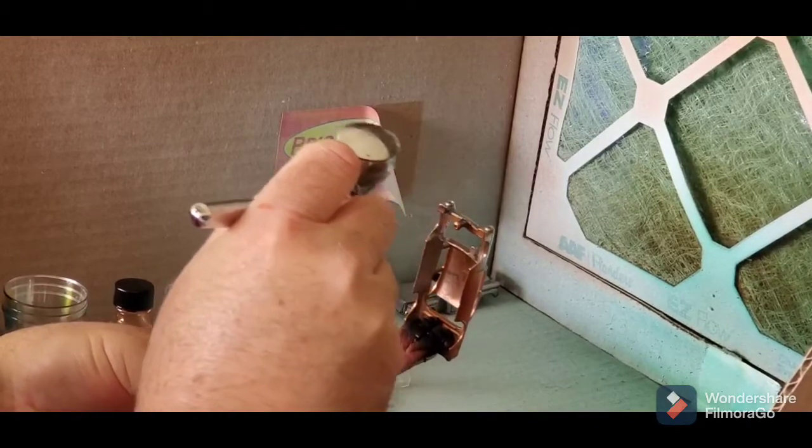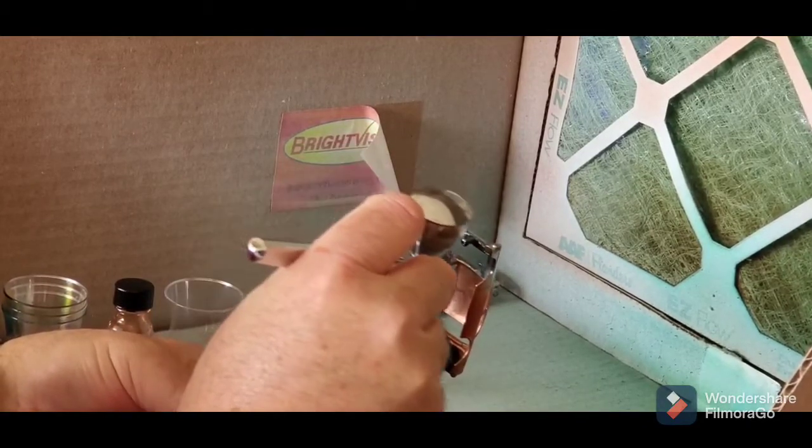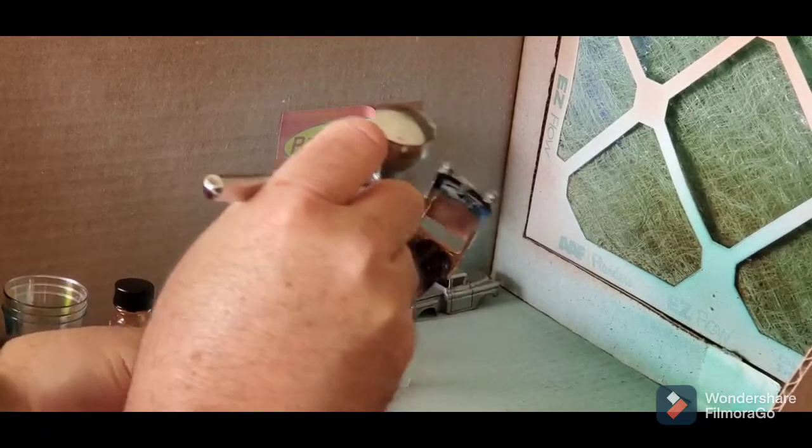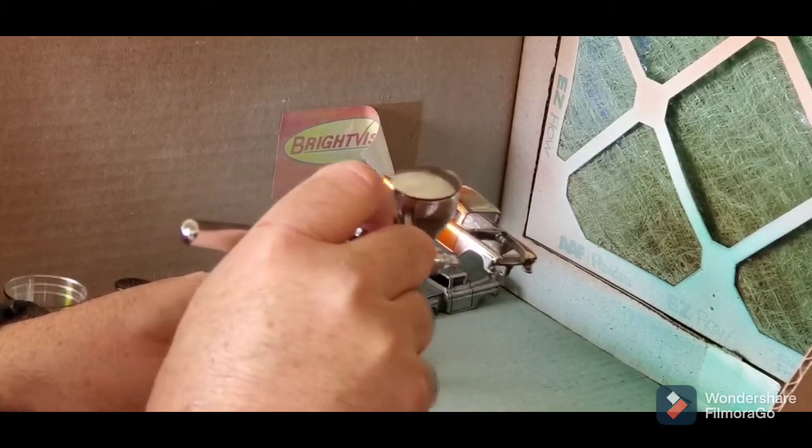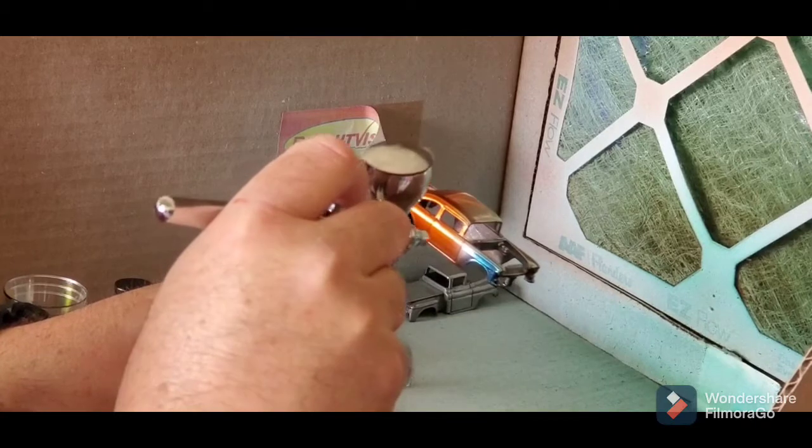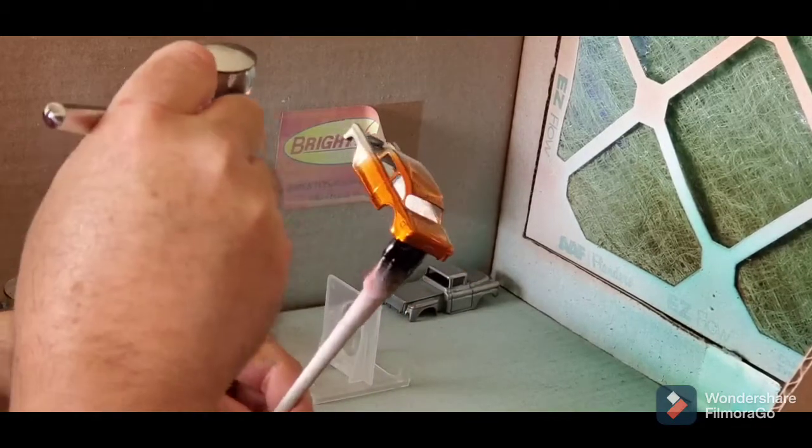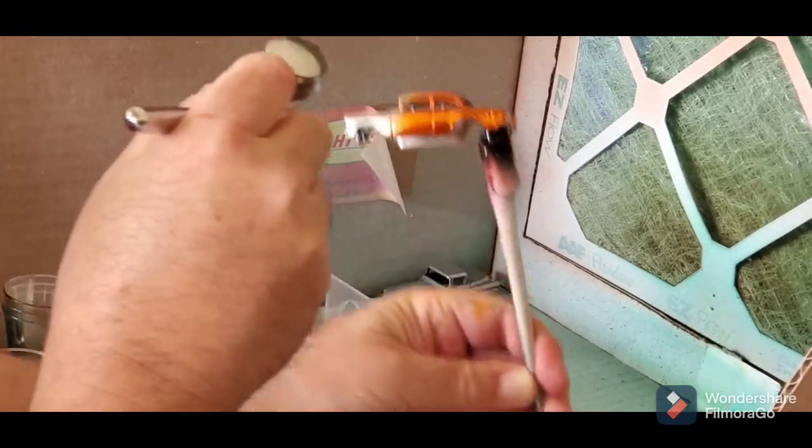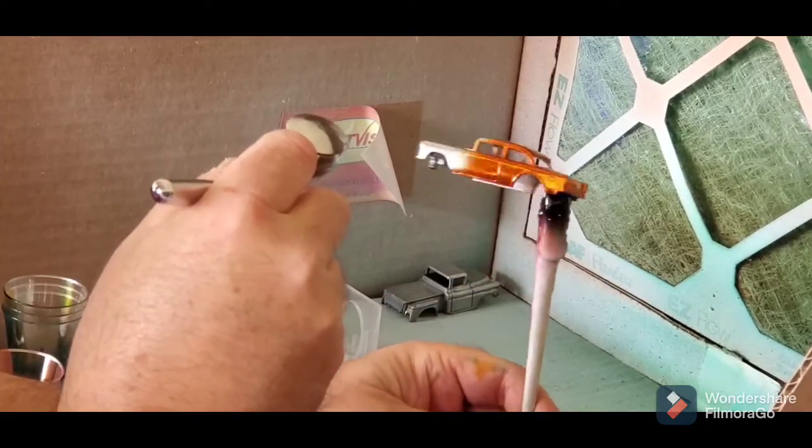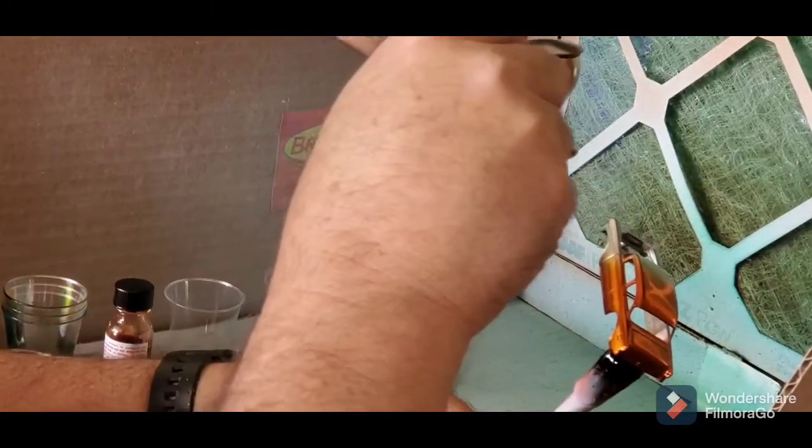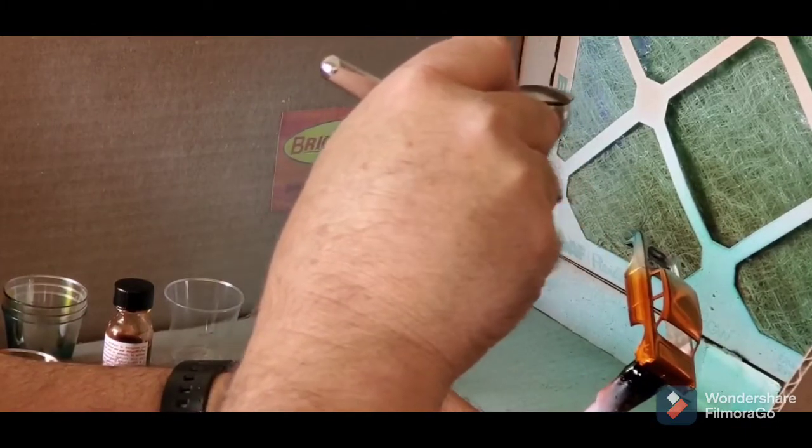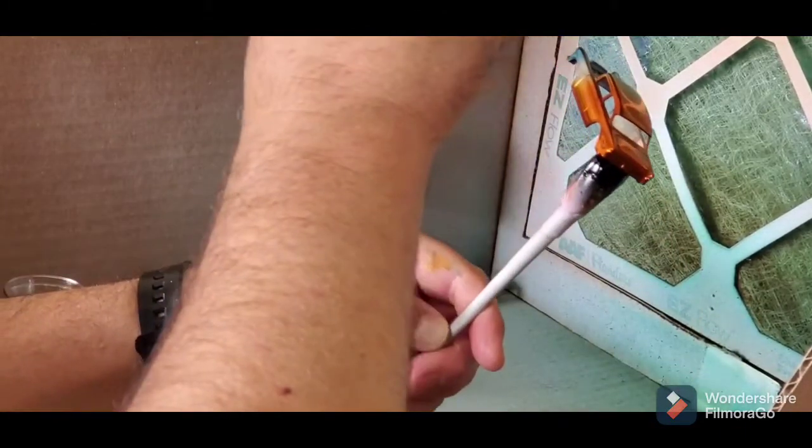So now we're going to put the blue on. Same identical way, real light coats. I do not saturate, especially when you're doing a two-tone paint job. Don't saturate your paint. Put it on light. And then look at your fade.